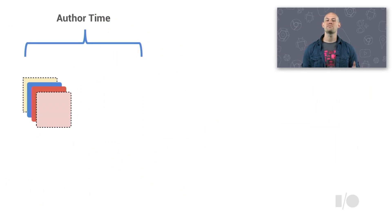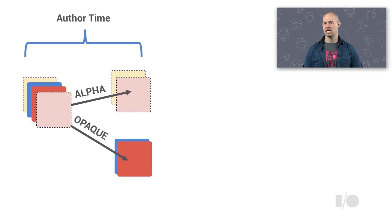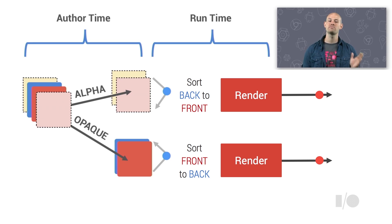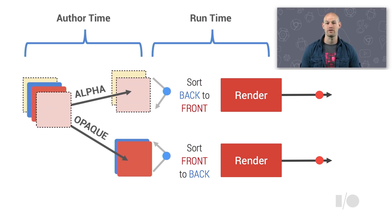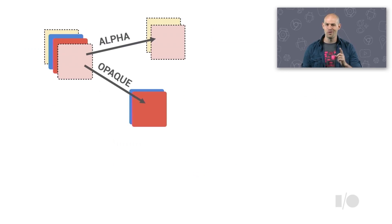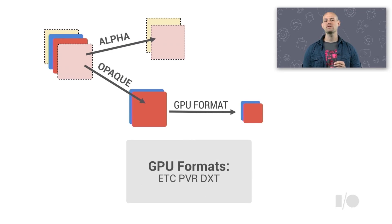To fix this in your game, it's actually pretty simple. When creating your atlases, split your alpha and opaque objects into separate textures. This will allow you, at runtime, to sort geometry based on what type of texture it has before rendering them to the final scene. The new process will help reduce overdraw and will help make your scene render faster. Once you've separated your opaque textures into their own atlas, make sure that you properly compress them with GPU texture formats.